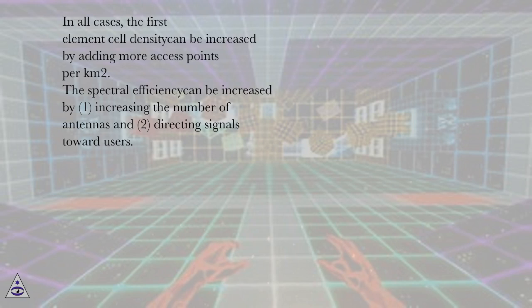In all cases, the first element cell density can be increased by adding more access points per square kilometer. The spectral efficiency can be increased by: increasing the number of antennas and directing signals toward users.